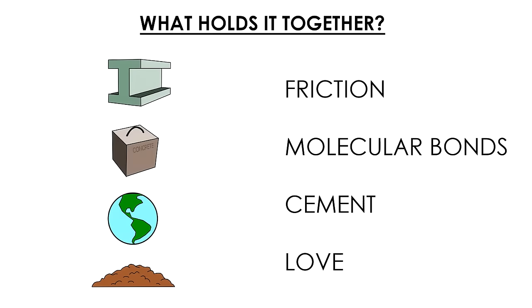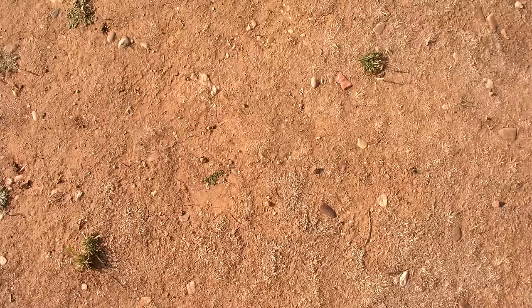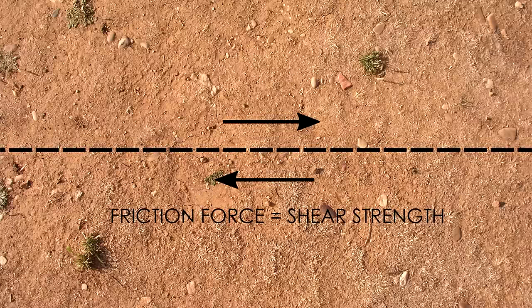Soils are frictional materials. Rather than being held together by molecular bonding like steel or by a binder like cement and concrete, their strength almost completely depends on internal friction between the soil particles themselves. If we want to avoid sliding, the frictional force can be considered the shear strength. The more friction, the more strength against shearing.